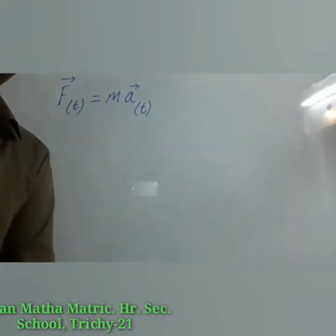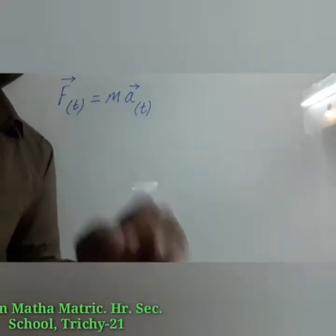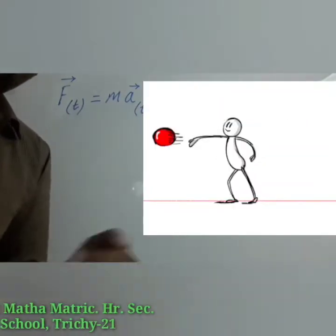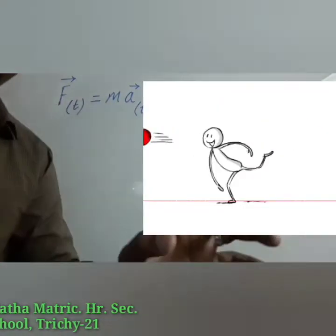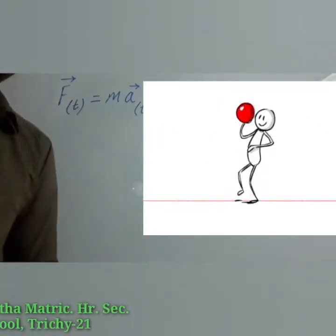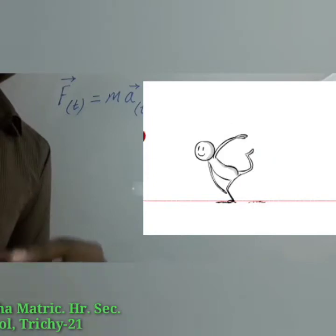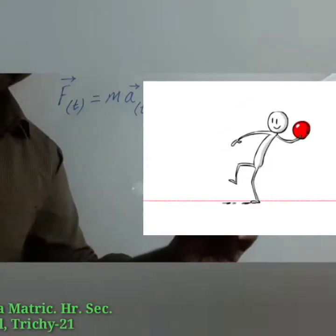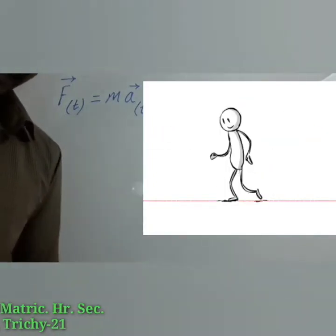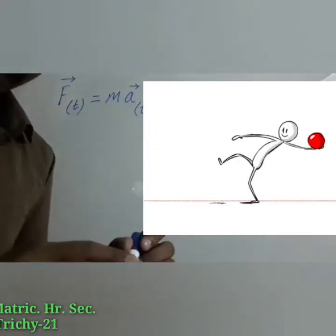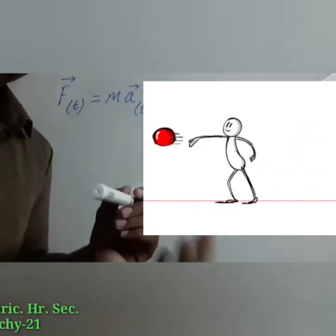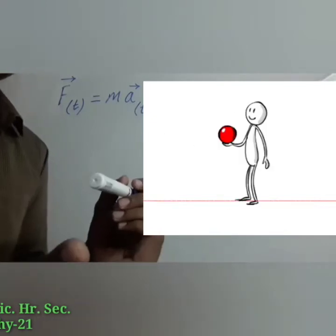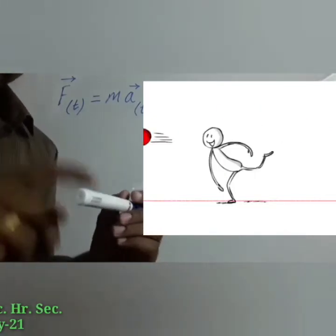Let us take one example. When a spin bowler or a fast bowler throws a ball to the batsman, once the ball leaves the hand of the bowler it will experience only gravitational force and air frictional force.